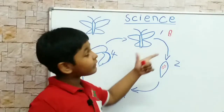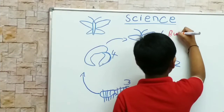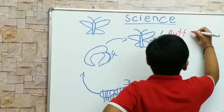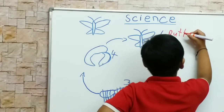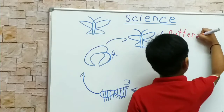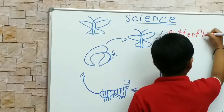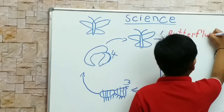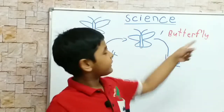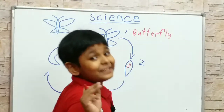And I write butterfly — B, U, T, T, E, R... now U, T, T, T, E, R. This is butterfly. So today now I write eggs — it is E...